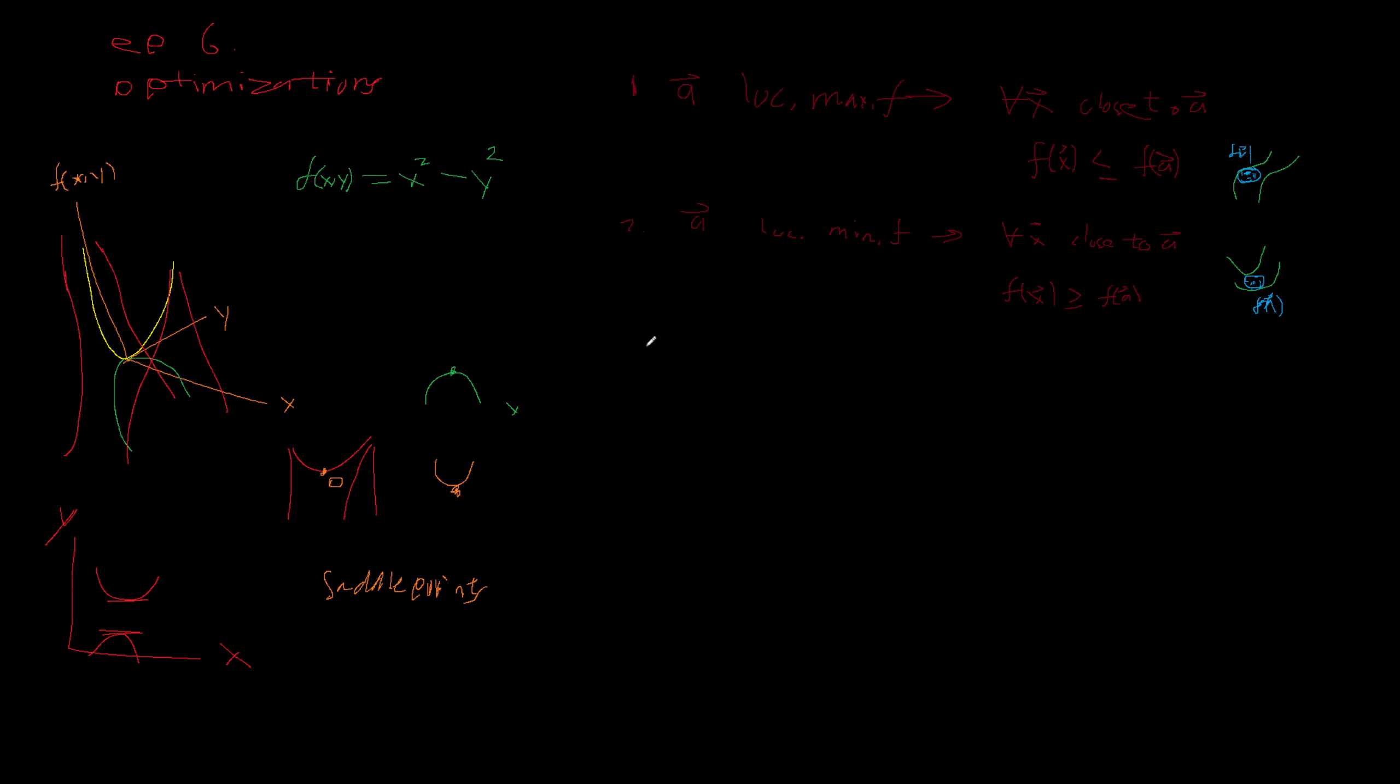And then finally we have, it is an extremum, okay, if the gradient at f of A is equal to 0. Obviously, because the vector isn't going anywhere. It's not moving. So we call this point, so f of A when this happens, is called a critical point. And you probably already know this from regular calculus.